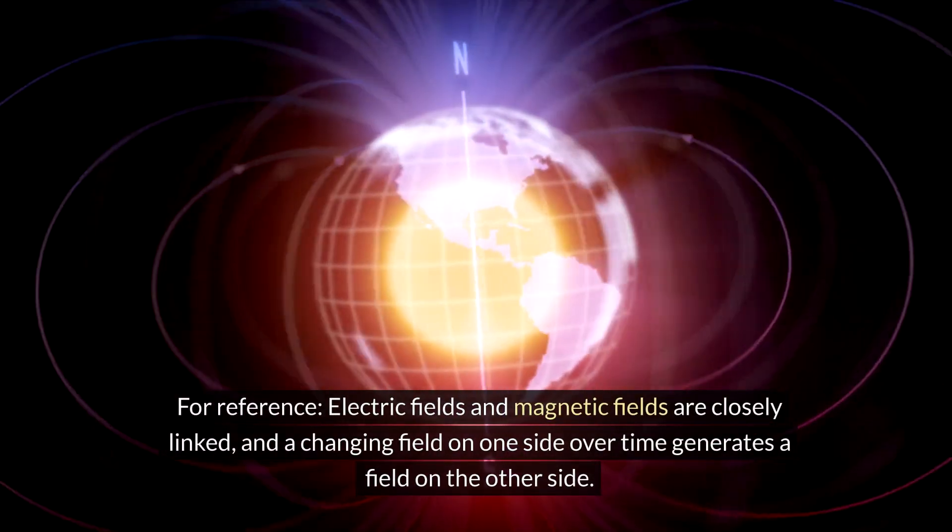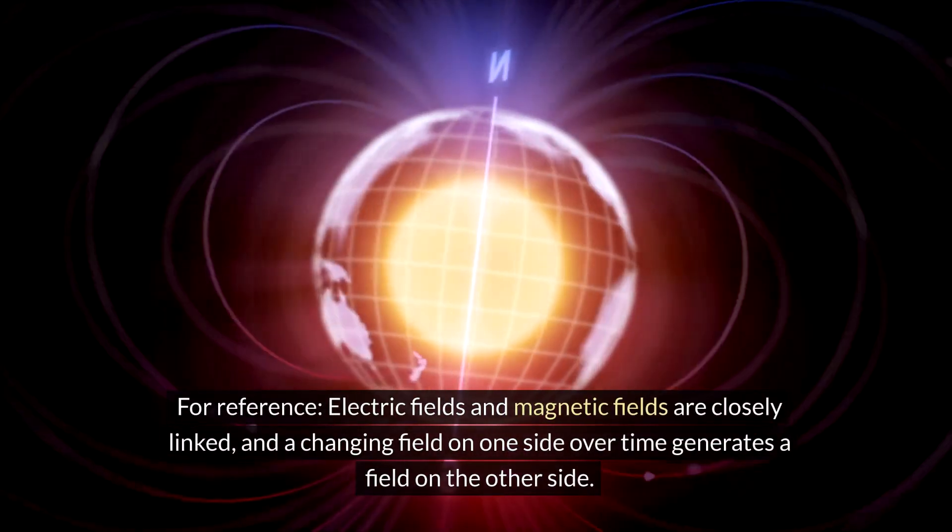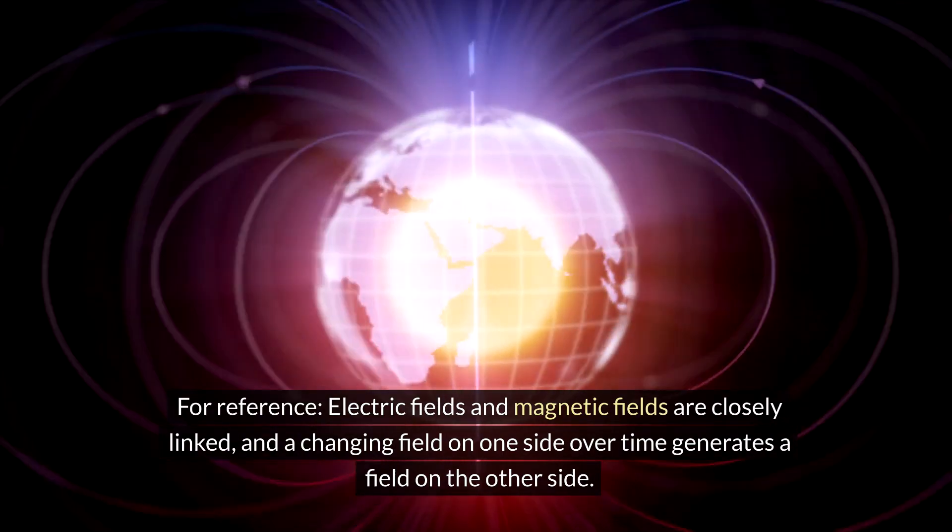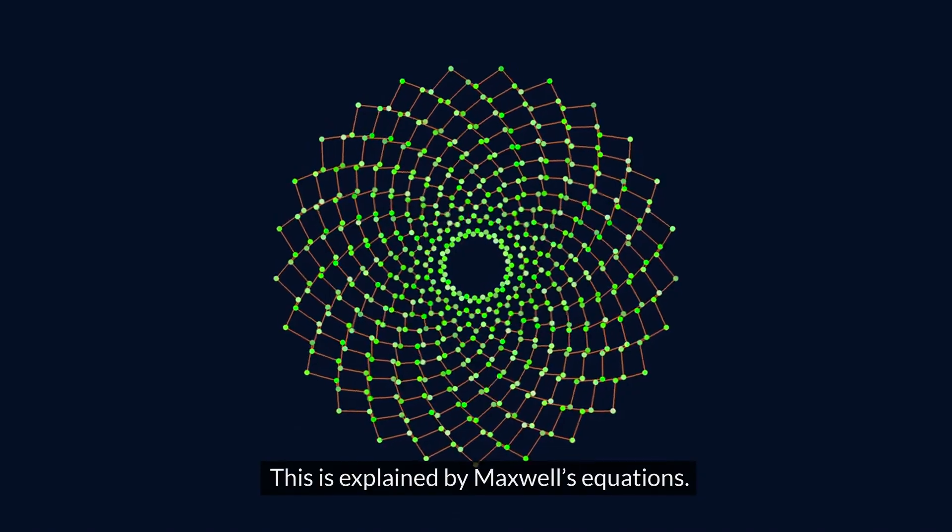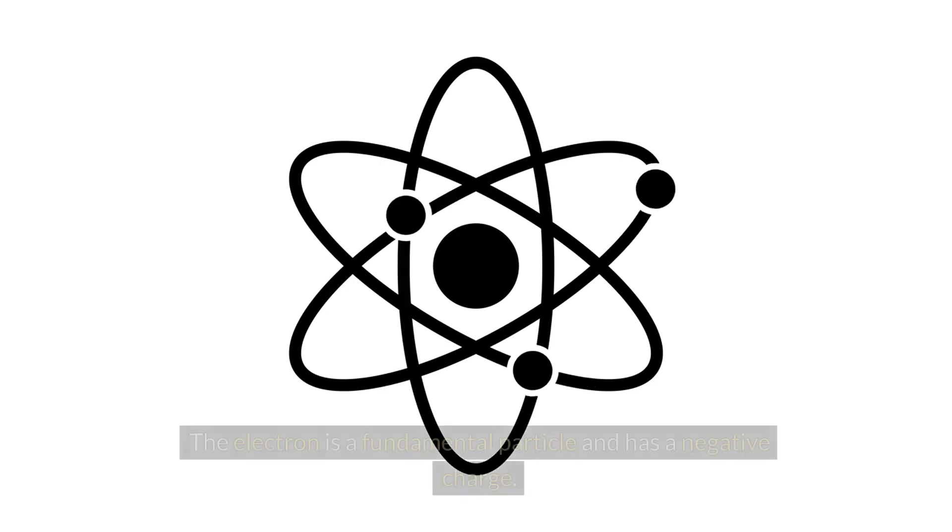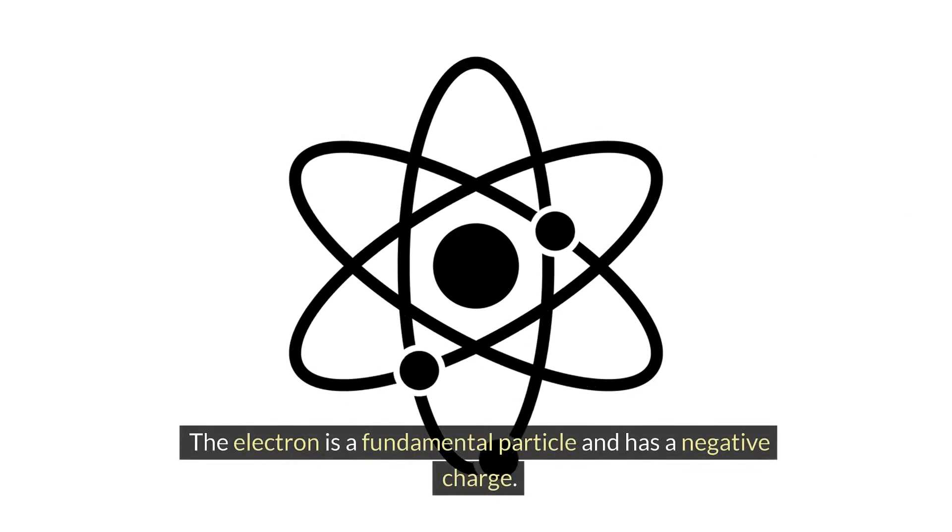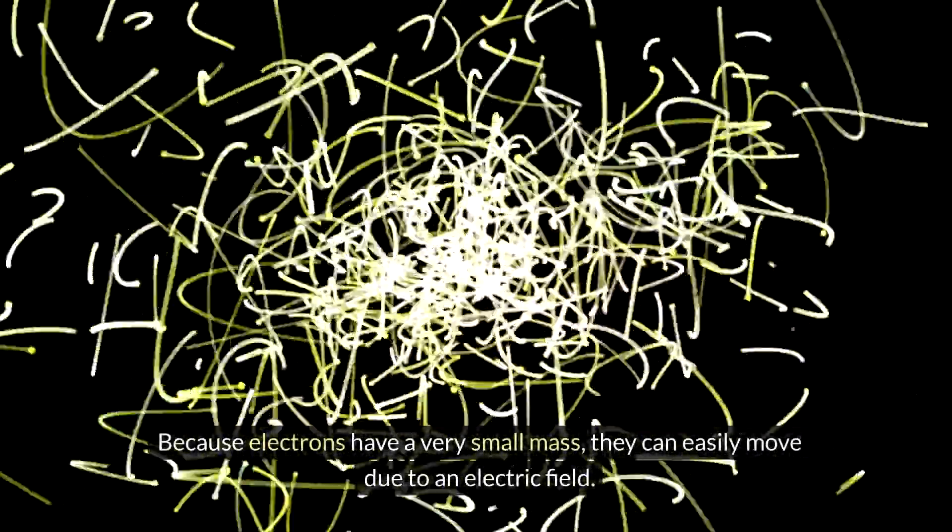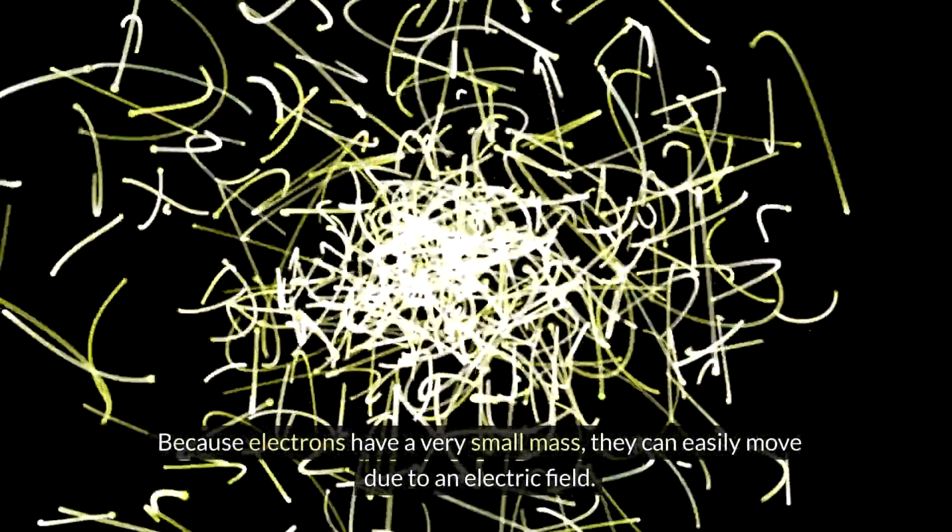For reference, electric fields and magnetic fields are closely linked, and a changing field on one side over time generates a field on the other side. This is explained by Maxwell's equations. The electron is a fundamental particle and has a negative charge. Because electrons have a very small mass, they can easily move due to an electric field.